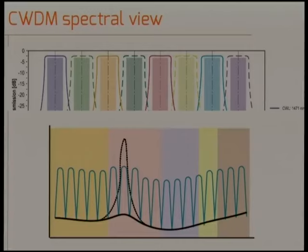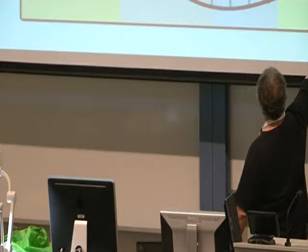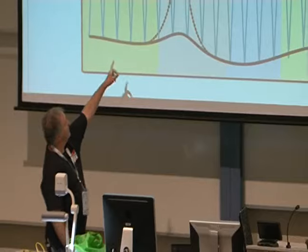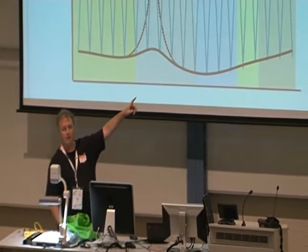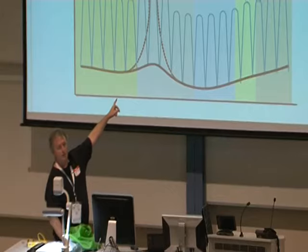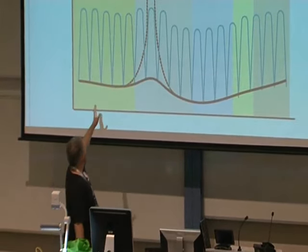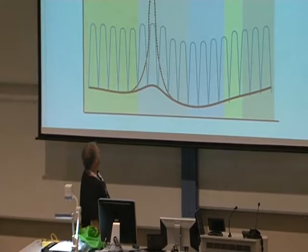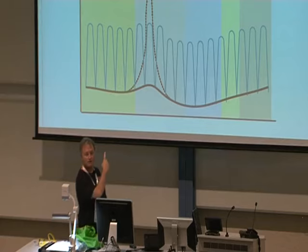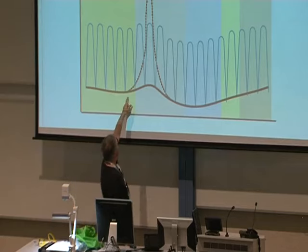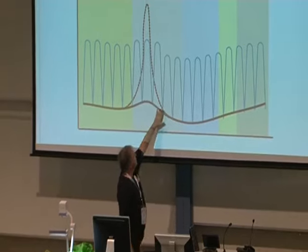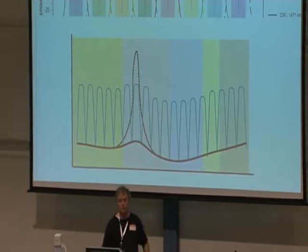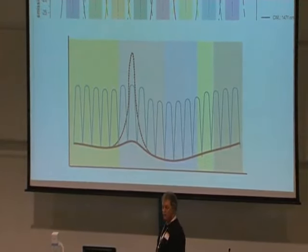Each signal, shown here in different colours, gets its own frequency. If you were to light them all up simultaneously, this is the response curve of the fibre — it would look vaguely like that on some sort of spectrum display. This here is an area of high attenuation in older fibres called the water peak, and as you can see, it takes out a range of channels. You may or may not have one of those older fibres.